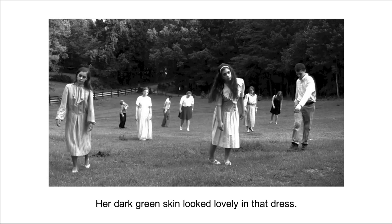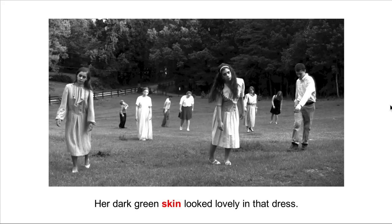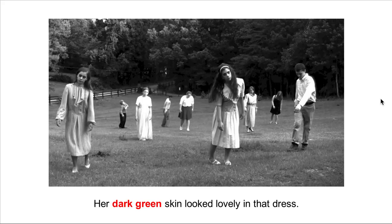Let's try another sentence: Her dark green skin looked lovely in that dress. Let's find the noun — the noun is skin. Now let's find the adjectives: I got green and I got dark. If we can reverse the order of the words dark and green and the sentence still makes sense, then these are two coordinate adjectives. Let's try it: Her green dark skin looked lovely in that dress. Well, green dark doesn't make sense — it's confusing. So those are not coordinating adjectives.